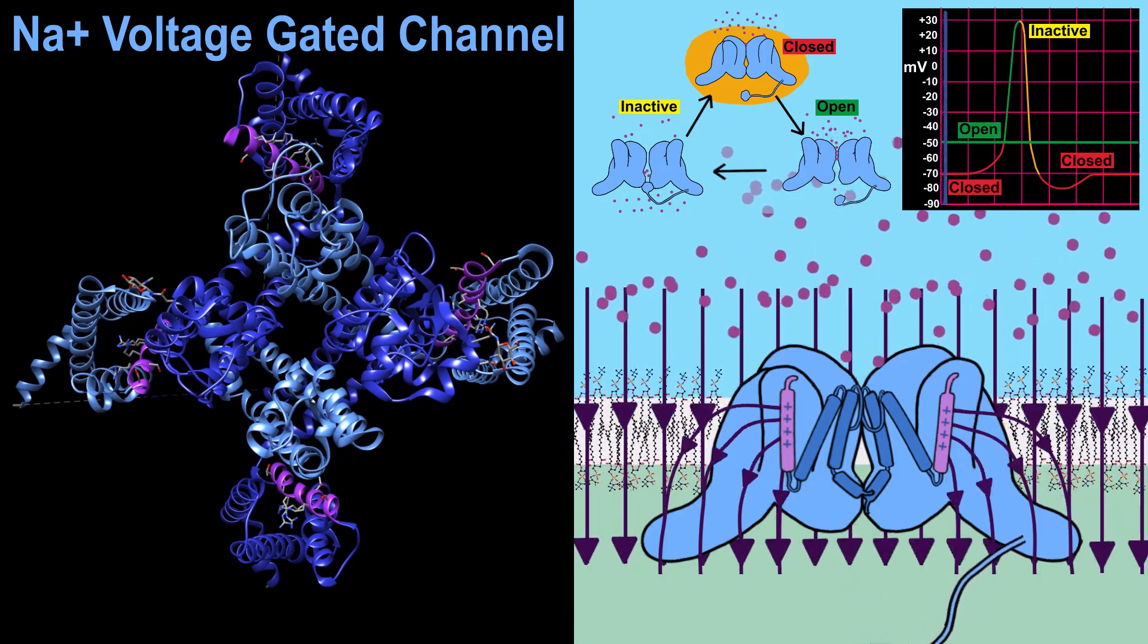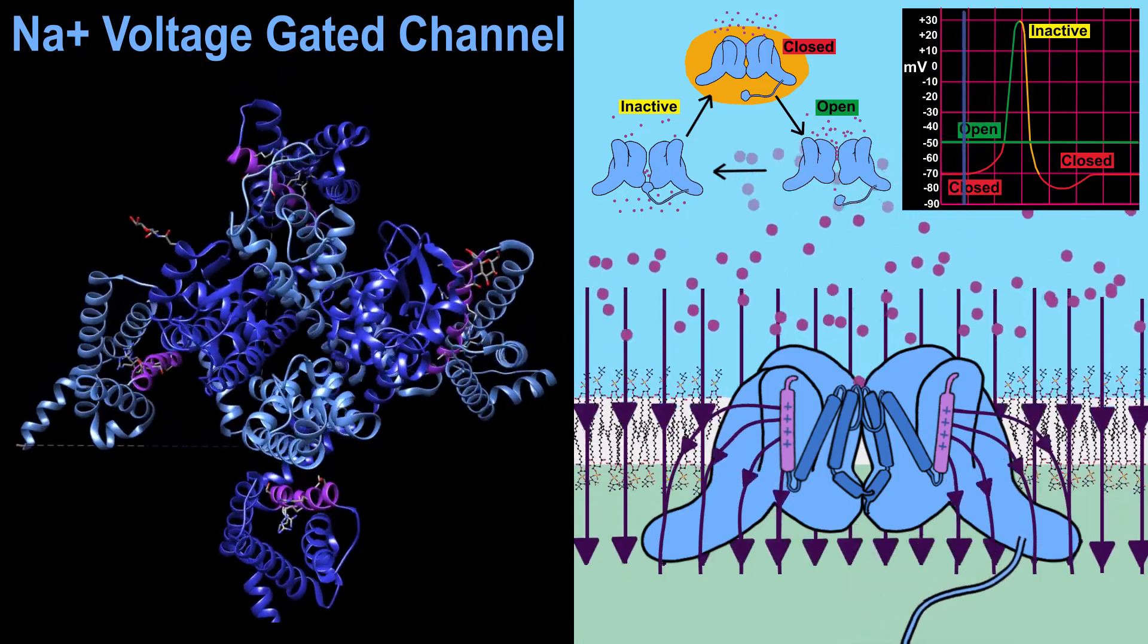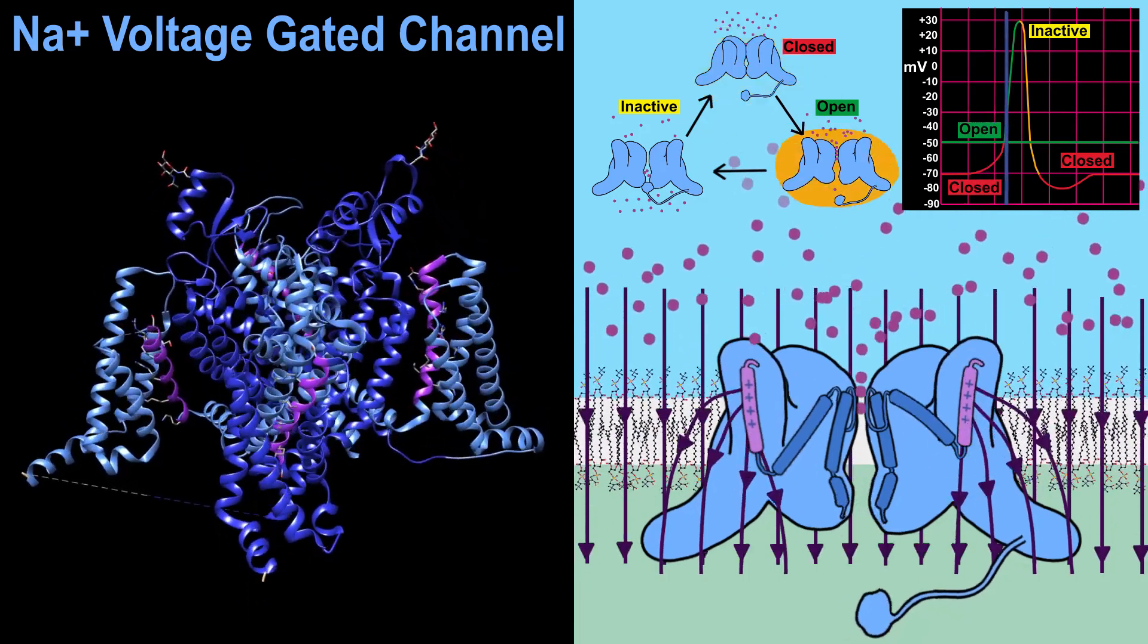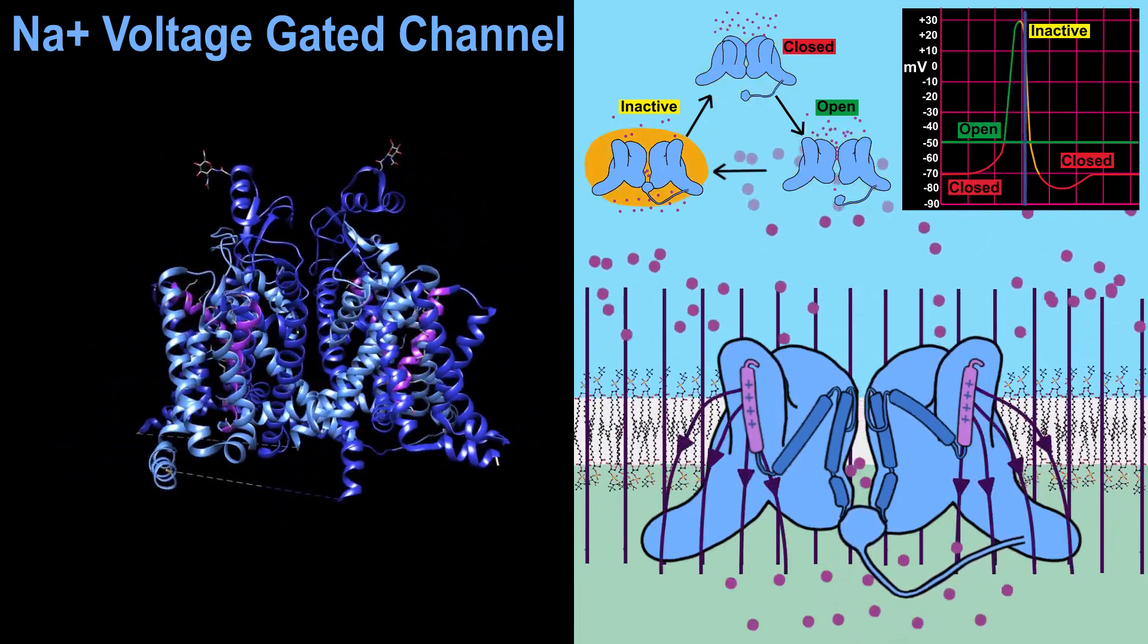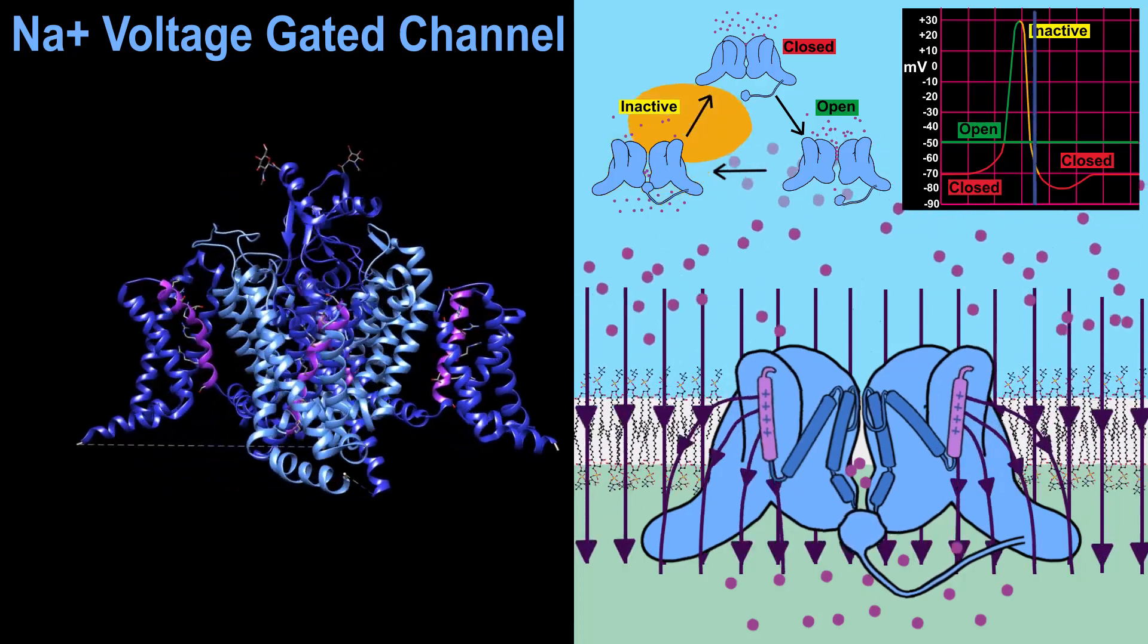The protein that depolarizes the cell membrane is a voltage-dependent sodium channel. As its name says, this protein forms a pore in the membrane and opens when it reaches a certain voltage.